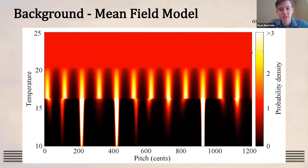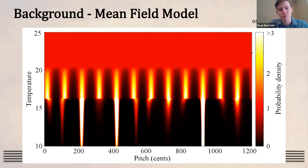This plot shows results from the mean field model: the probability density of different pitches across temperatures. At high temperature there's a disordered phase where all pitches have equal likelihood — essentially unorganized sound. At around T=21 there's a transition to 12-fold symmetry with 12 evenly spaced peaks of equal height. At around T=16, another transition occurs where the peaks shift — they're not evenly spaced and some peaks are much higher than others. Each transition is marked by a sudden shift in symmetry, from uniform distribution to 12-fold symmetry, then giving strong preference to a small set of pitches.